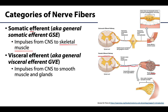Visceral efferent fibers are associated generally with the autonomic nervous system. These fibers transmit impulses from the central nervous system, with an intermediate neuron involved where a synapse occurs before reaching the target effector. The target effectors for visceral efferents are either smooth muscle — typically unconsciously controlled — or glands. For a gland the effect will be increasing or decreasing secretion, and for smooth muscle it will be contraction or relaxation.